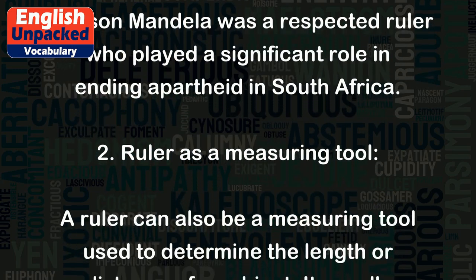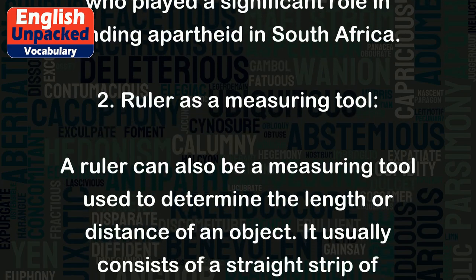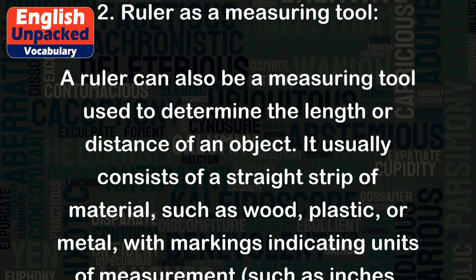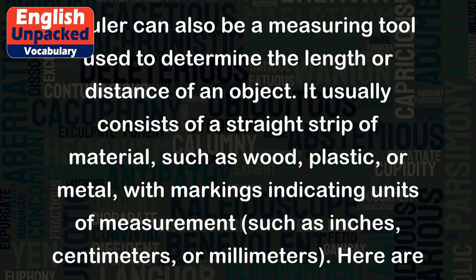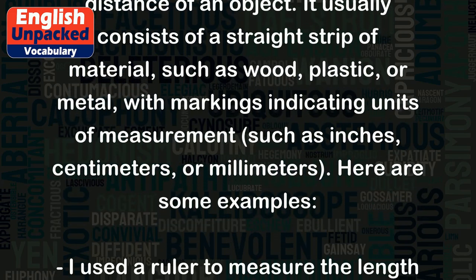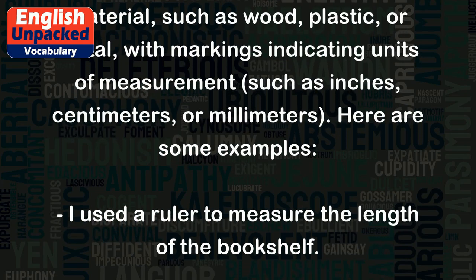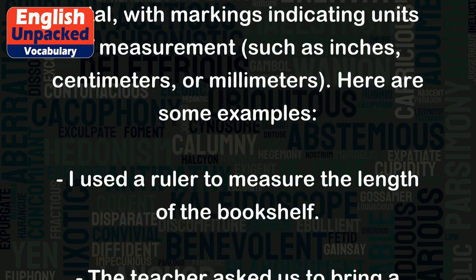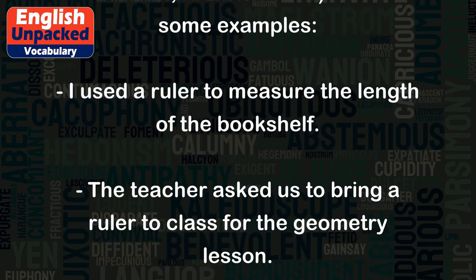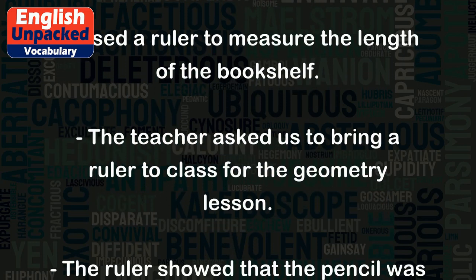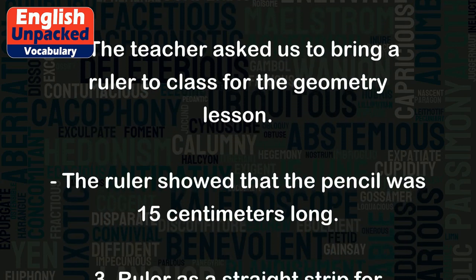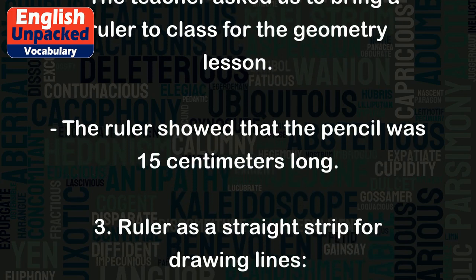2. Ruler as a measuring tool. A ruler can also be a measuring tool used to determine the length or distance of an object. It usually consists of a straight strip of material, such as wood, plastic, or metal, with markings indicating units of measurement, such as inches, centimeters, or millimeters. Here are some examples: I used a ruler to measure the length of the bookshelf. The teacher asked us to bring a ruler to class for the geometry lesson. The ruler showed that the pencil was 15 centimeters long.